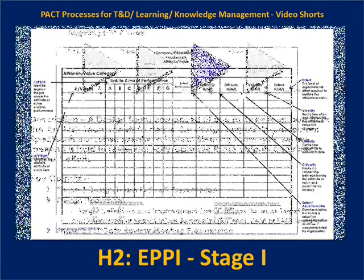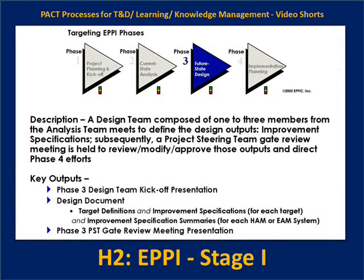In Phase Three, a future state design is created using whatever tools we use to capture both process performance and all of the enablers. We can then compare and contrast what's going to be needed that's new and different — or still needed — in the future state compared to the current state.